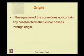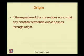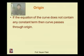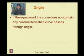The second point is origin. If the equation of the curve does not contain any constant term, the curve passes through the origin. For example, y² = 4x has no pure constant term, which means this curve passes through the origin.